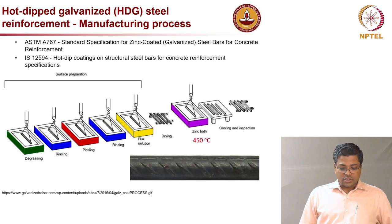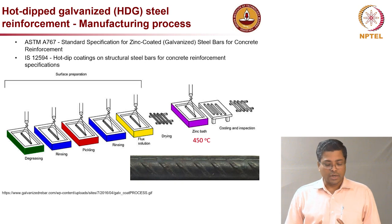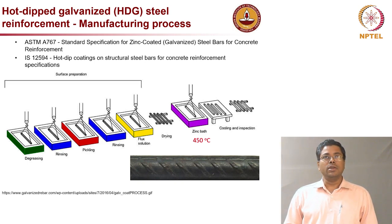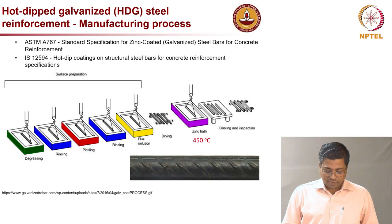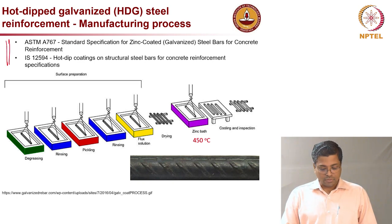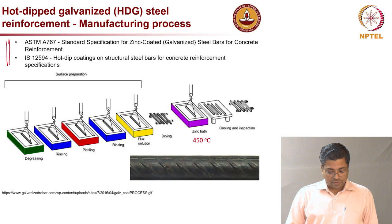First let us talk about galvanized steel rebars or hot-dipped galvanized steel reinforcement. The two specifications available for selecting or qualifying this type of rebar are ASTM A767 and IS standard 12564.